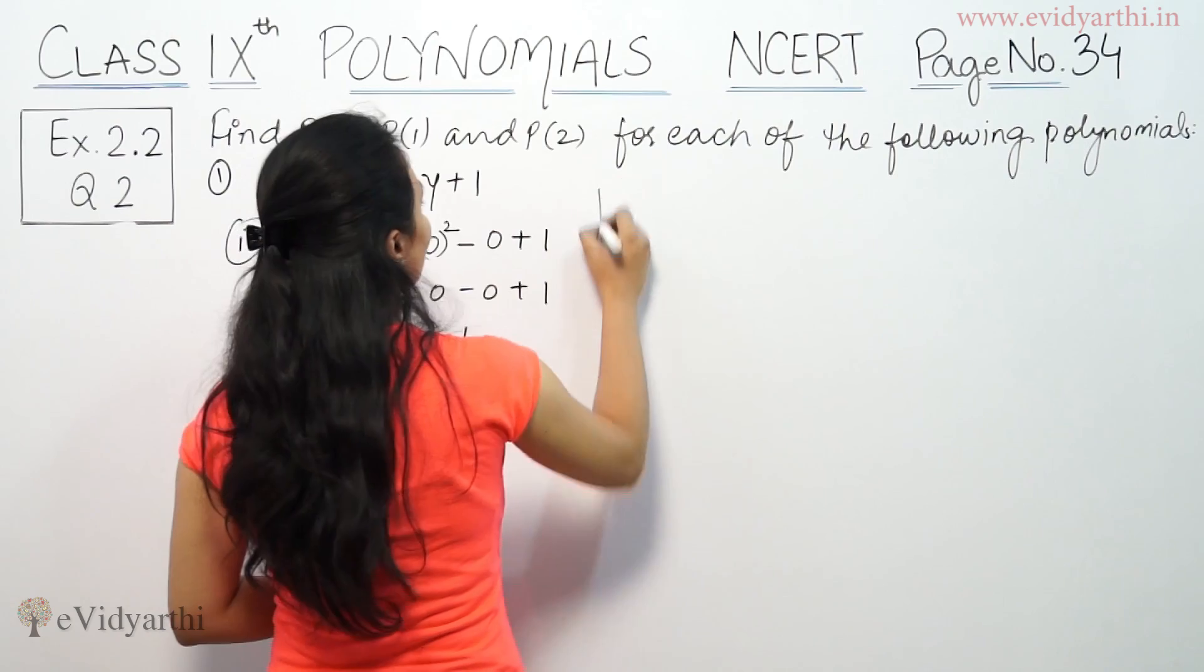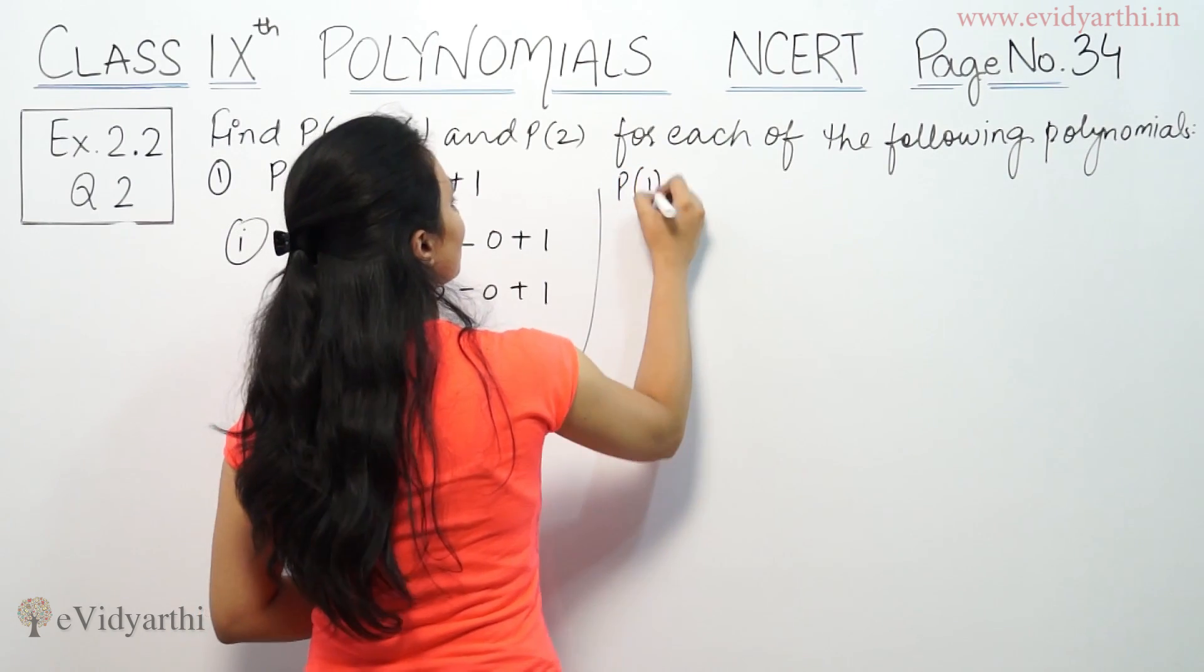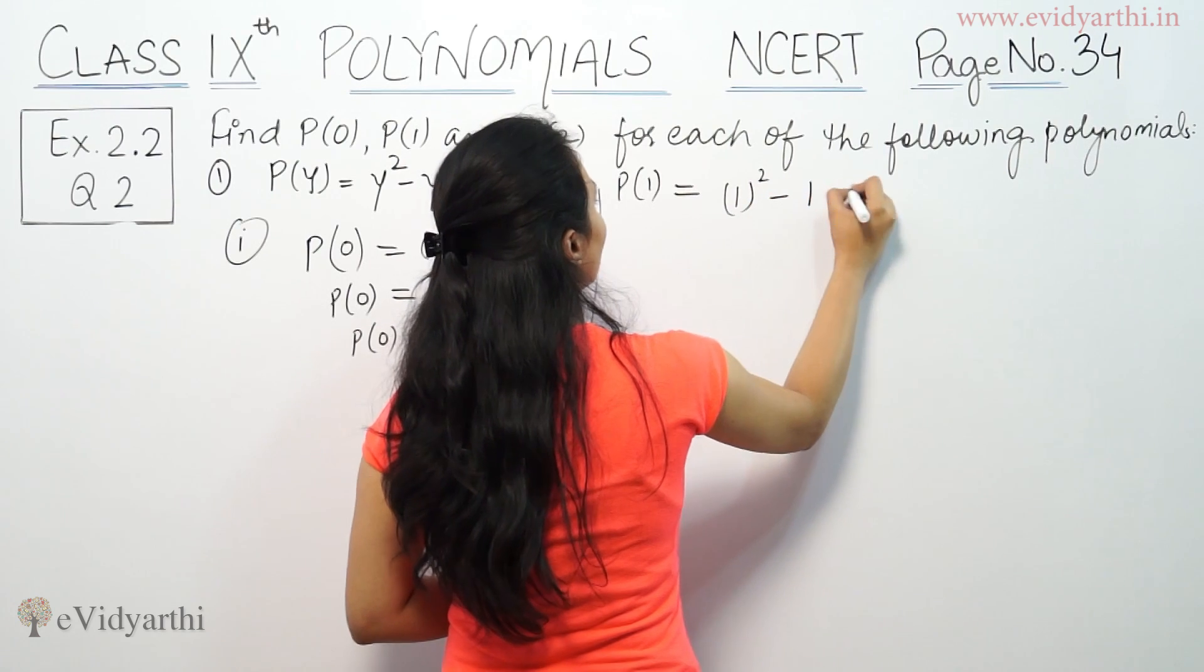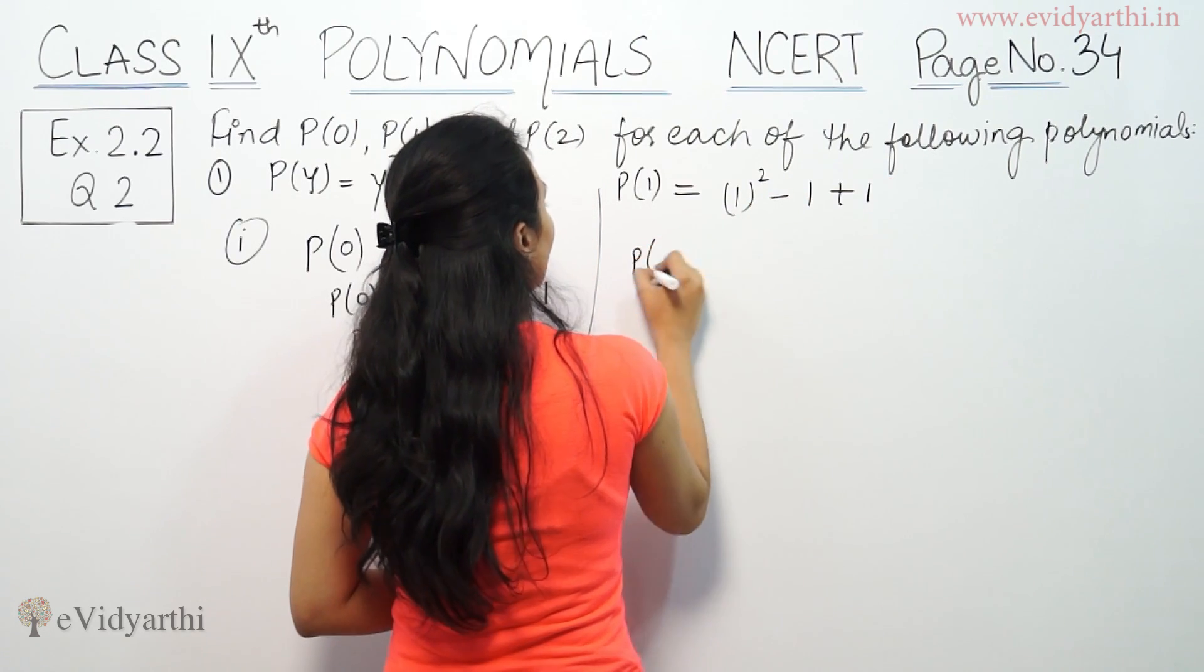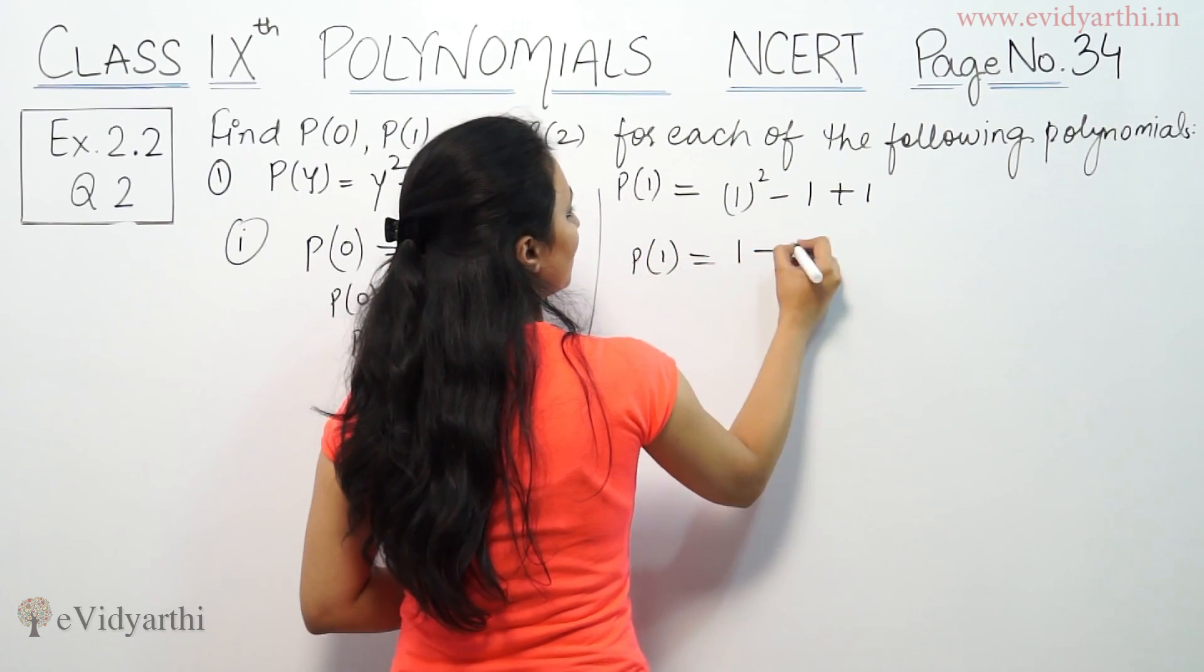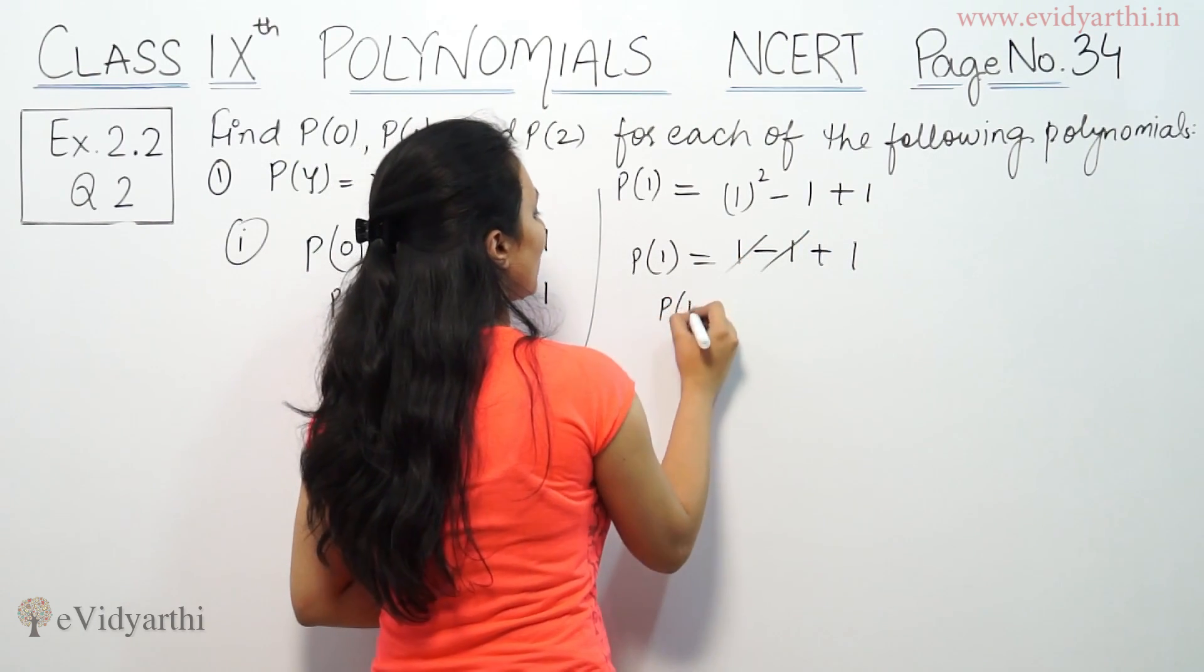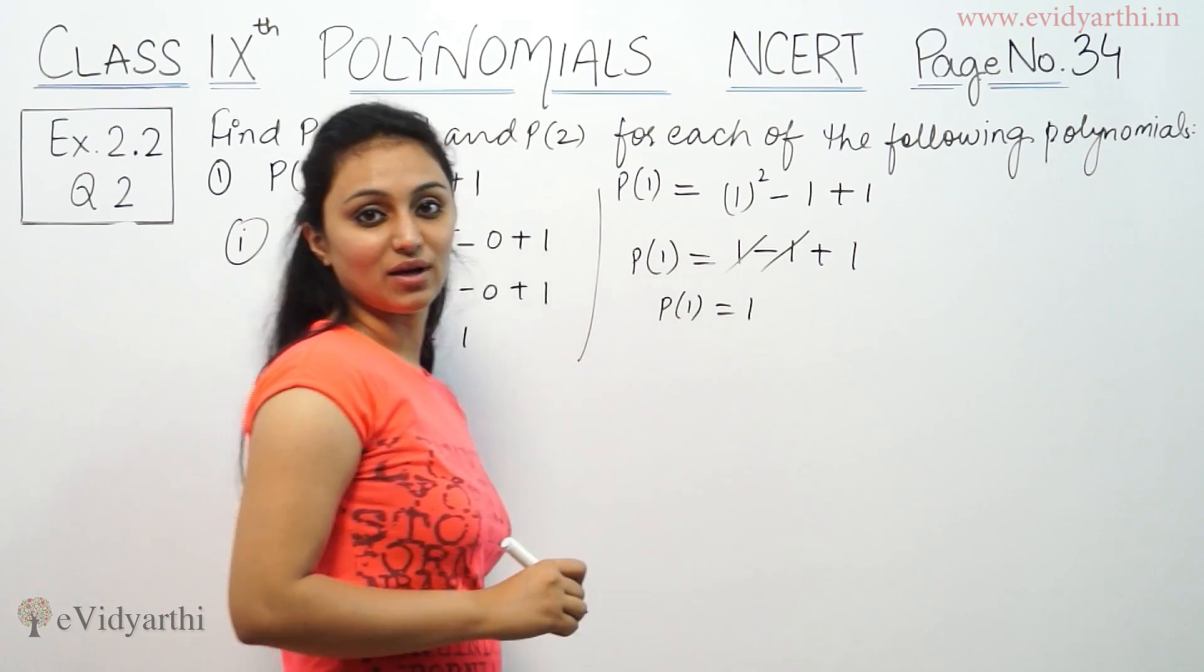Same way, now we find P(1). So for P(1), in place of y we put 1 squared minus 1 plus 1. So P(1) will be 1 minus 1 plus 1. Positive 1, negative 1 cancel out. So P(1) is positive 1.